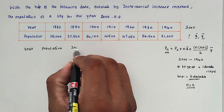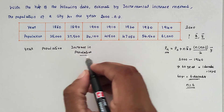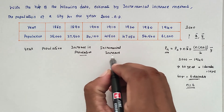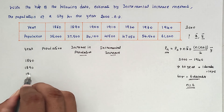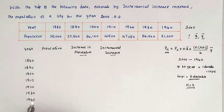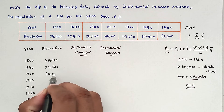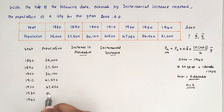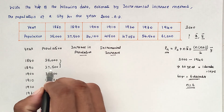We set up three columns: Year, Population, Increase in Population (for x̄), and Incremental Increase (for ȳ). The years are 1880, 1890, 1900, 1910, 1920, 1930, and 1940, with corresponding populations: 25,000; 27,500; 34,100; 41,500; 47,050; 54,500; and 61,000.